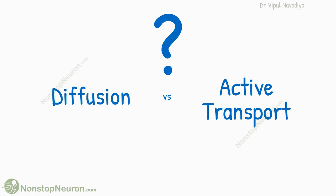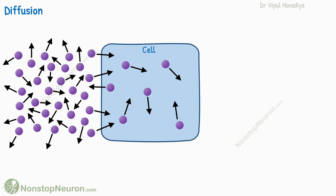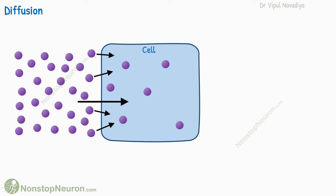What is the difference between diffusion and active transport? Let's see. Diffusion is basically a random movement of molecules. During diffusion, there is a net movement of a substance down its electrochemical gradient.